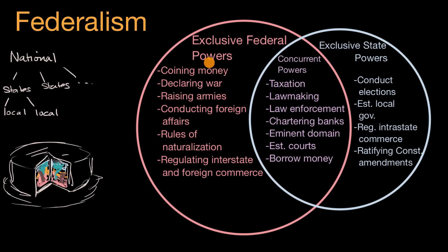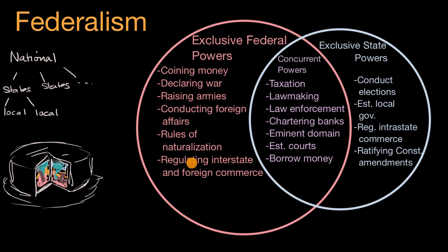On the left-hand side you have exclusive federal powers. In the United States, only the federal government can coin money — you can't have money from Texas or California. Only the federal government can declare war, which is related to conducting foreign affairs, raising armies, and rules of naturalization: who becomes an immigrant, who gets a green card, who becomes a citizen — all determined by the federal government, not the states. The federal government also regulates foreign commerce, trade agreements, and interstate trade.